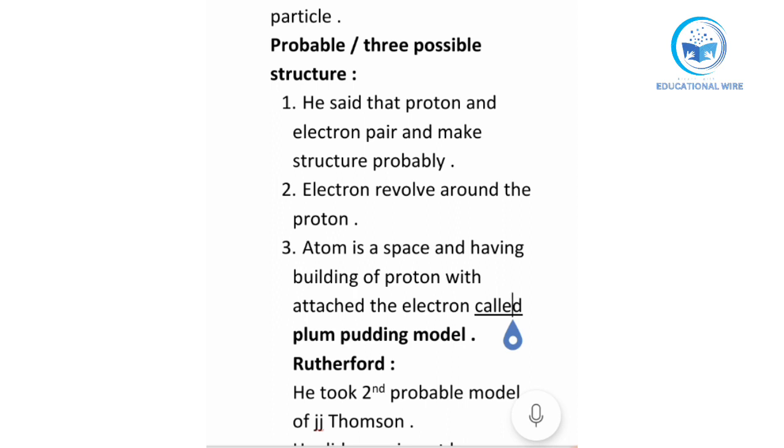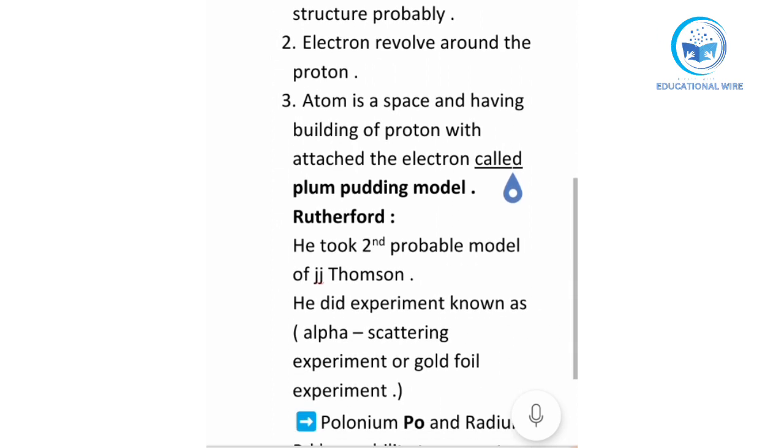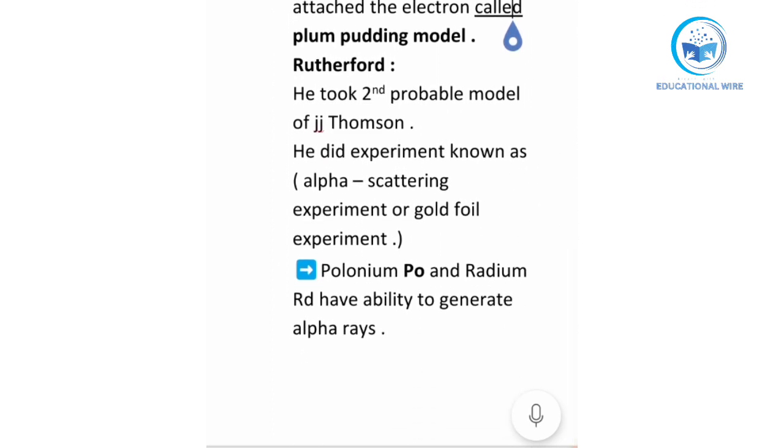But this was wrong. He gave this theory but this theory was probably wrong. After that there were more inventions. So Rutherford took his second probable possible structure that electron revolves around the proton. He did experiment known as alpha scattering experiment or you can also say gold foil experiment.